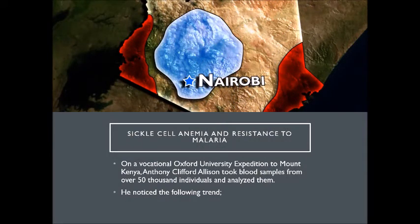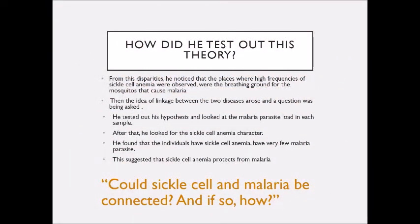Sickle cell anemia and resistance to malaria: on an Oxford University expedition to Mount Kenya, Anthony Clifford Alison took blood samples from over 50,000 individuals and analyzed them. He noticed that the places where high frequencies of sickle cell anemia were observed were the breeding grounds for the mosquitoes that cause malaria. The idea of a linkage between the two diseases arose. He tested his hypothesis and looked at the malaria parasite load in each sample. He found that individuals who have sickle cell anemia have very few malaria parasites, suggesting that sickle cell anemia protects against malaria.